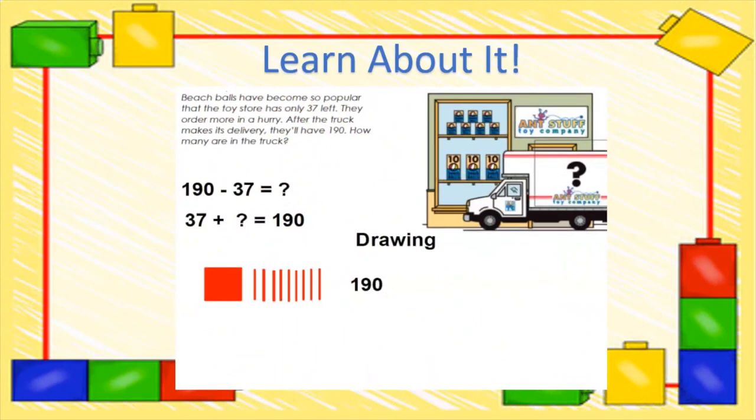Okay, so now let's learn about it. We are going to take three-digit numbers and we're going to see how we can subtract those numbers through reading story problems. So what I'd like you to do is I want you to read the story problem with me as I read it. Beach balls have become so popular that the toy store has only 37 left. They order more in a hurry. After the truck makes its delivery, they'll have 190 beach balls. How many are there in the truck?